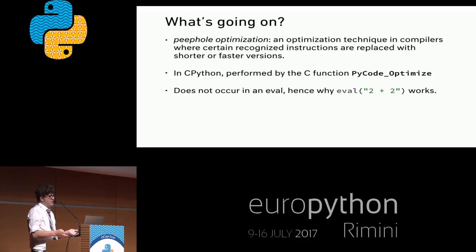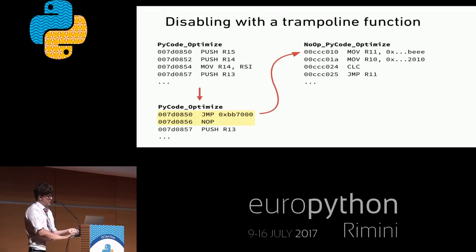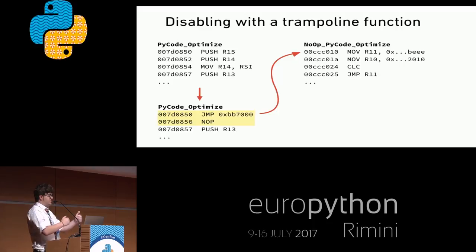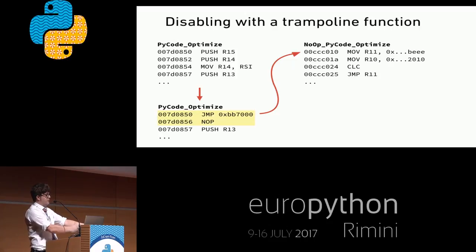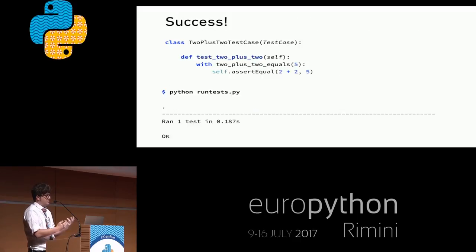In CPython this is performed by the C function PyCode_Optimize. It doesn't occur in eval(), which is why eval('2+2') works but not when it's defined in a Python function. The way to get around this is to disable Python code optimization with a trampoline function: you take the memory where PyCode_Optimize is, overwrite the first few assembly instructions to jump to a new address, and that new address is a no-op function that just returns the code unchanged and increments the reference. And with that — success. The tests pass.